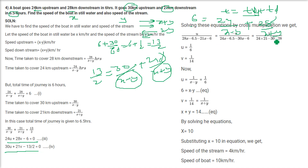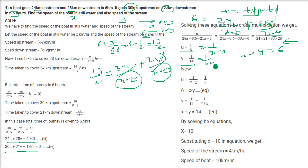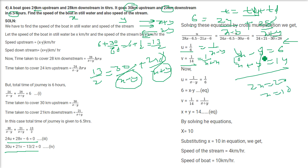From U equals 1/6: X minus Y equals 6. From V equals 1/14: X plus Y equals 14. Adding: 2X equals 20, so X equals 10. Putting X as 10, Y equals 4. So the speed of the stream is 4 km/hr and the speed of the boat in still water is 10 km/hr.